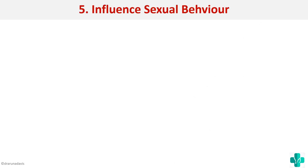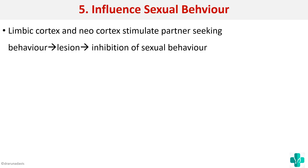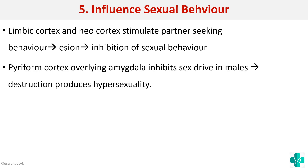The limbic system has a complex influence on sexual behavior. The limbic cortex and neocortex stimulate partner-seeking behavior, so a lesion there will inhibit sexual behavior. The piriform cortex, which overlies the amygdala, usually inhibits the sexual drive in males, so a lesion there will produce hypersexuality. The limbic system thus has two different effects on sexual behavior.